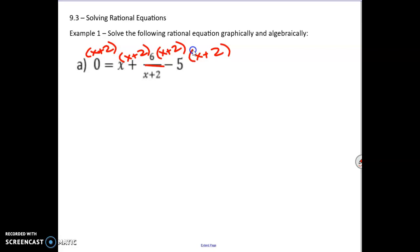When I multiply 0 by x plus 2, I still get 0. The next part, we have x multiplied by x plus 2. The next part, something different is going to happen because I'm multiplying by x plus 2 and I'm dividing by x plus 2. So multiplying and dividing undo each other, which means they're going to cancel out. So all we're left with there is just plus 6, because the x plus 2 has been multiplied out. And then for the last part of the equation, we've got minus 5 times x plus 2.